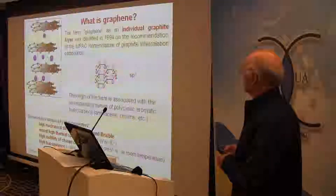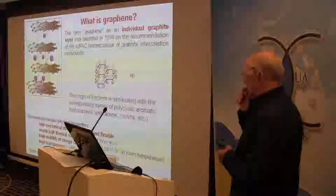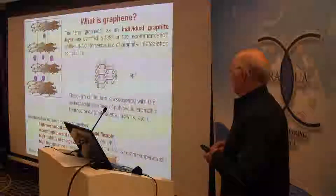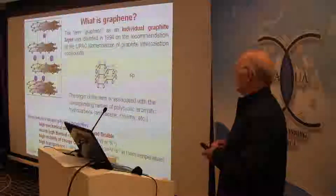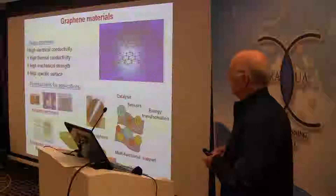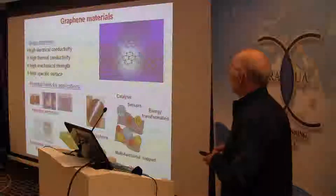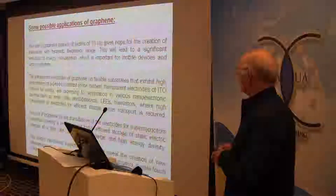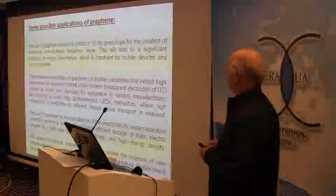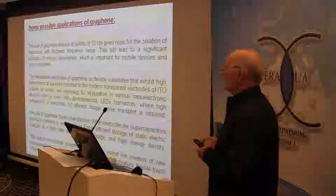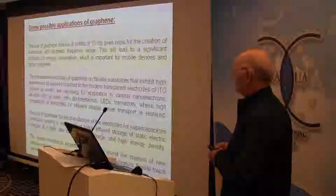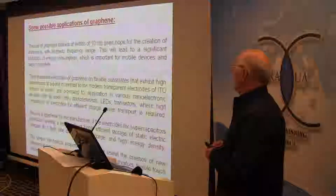Now I will talk about graphene and some related materials. Graphene has unique physical properties like high mechanical strength, record high thermal conductivity, high mobility of charge carriers, and high transparency. This makes it very good for different applications. In literature you can find some possible applications of graphene and related materials — these are only several examples, and of course more applications can be developed in the near future.